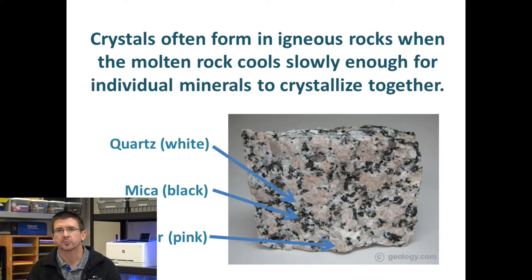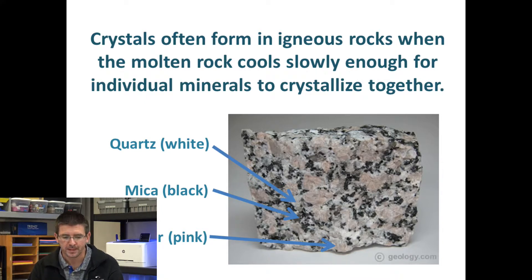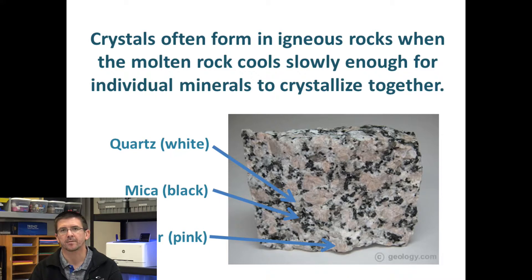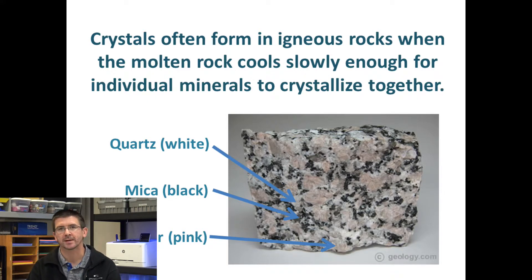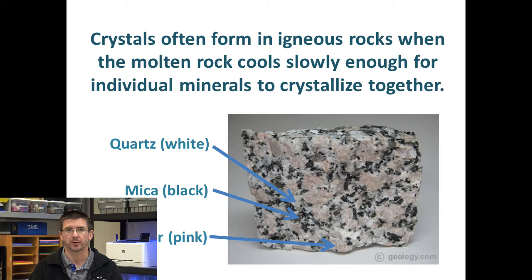Crystals in igneous rocks form as the rocks cool. We can actually tell how quickly an igneous rock formed based on the size of the crystals. The larger the crystal, the more slowly the rock generally cooled. If it's a smaller crystal, or maybe even no crystals present, we know that it cooled very rapidly.